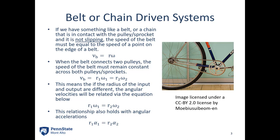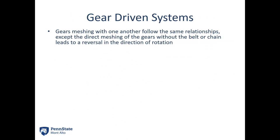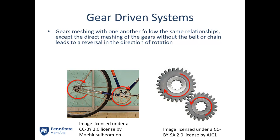For gear driven systems, it follows essentially the same relationship except the directions are reversed. In a belt or chain system all pulleys rotate in the same direction, but when gears mesh, the velocity direction is reversed — a clockwise input gives a counterclockwise output. So we add a negative sign: r1·omega1 equals negative r2·omega2, and r1·alpha1 equals negative r2·alpha2.